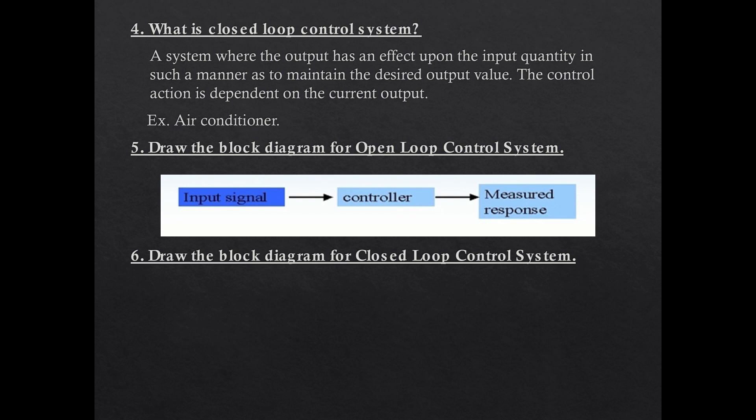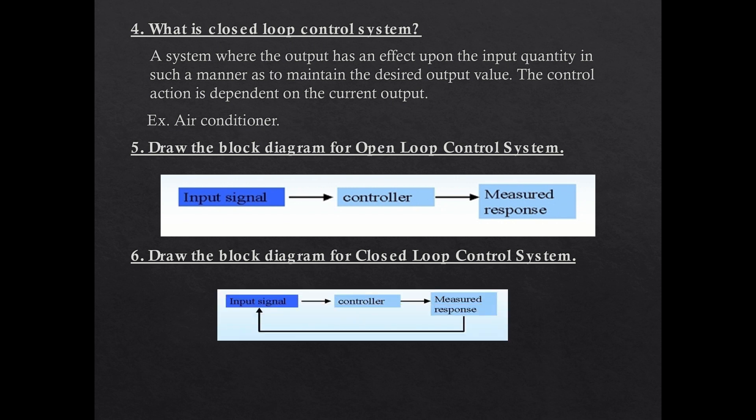Draw the block diagram for an open loop control system. There is an input signal, a controller, and an output — that's it. There is no connection between the output and input. For a closed loop control system, there is an input signal, a controller, an output response, and the output is fed back to the input signal. The feedback is obtained and the system can correct itself automatically. This is called the closed loop control system.